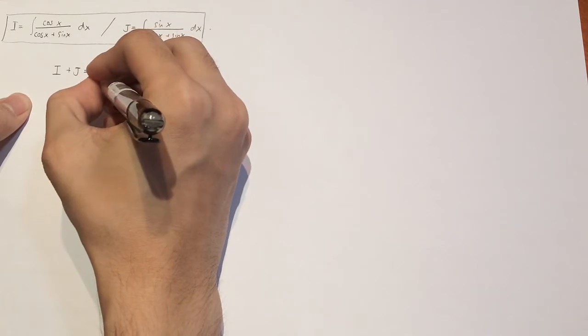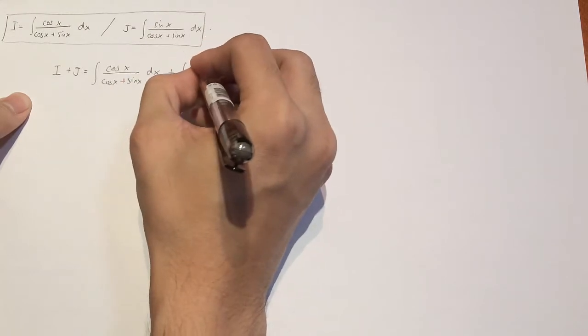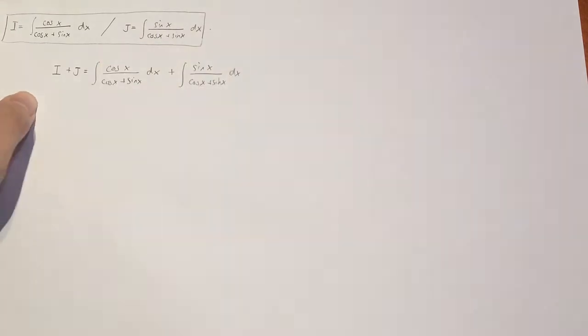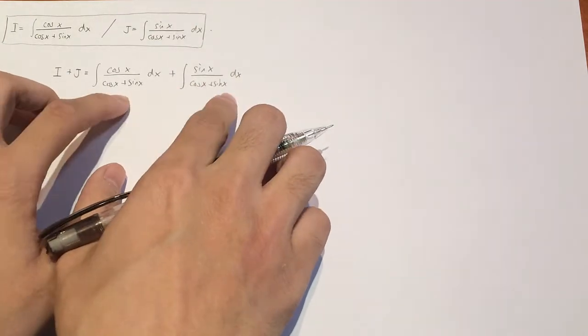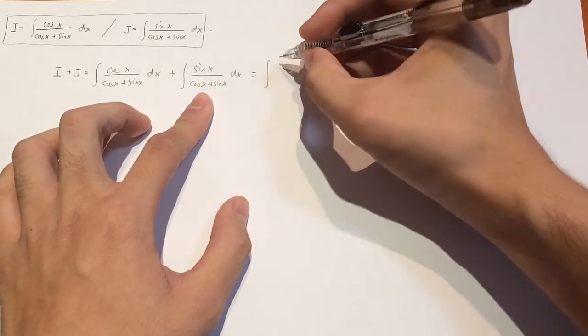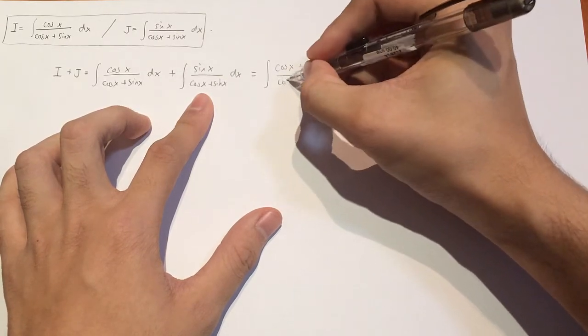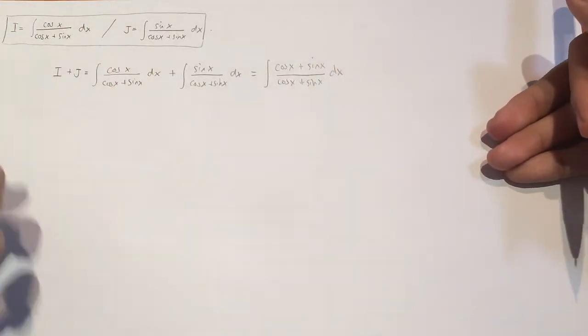So what happens if we add i and j together? It's basically like adding these two integrals together. So we have the integral of cos x divided by cos x plus sin x dx plus the integral of sin x divided by cos x plus sin x dx. Now, as you can see here, when we add two integrals together, it's like we're integrating the two functions added together. So instead of writing this, I can group these two functions together.